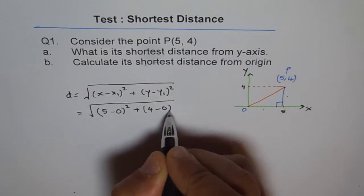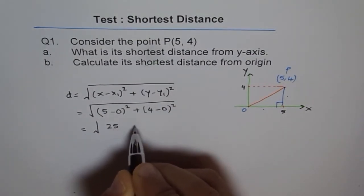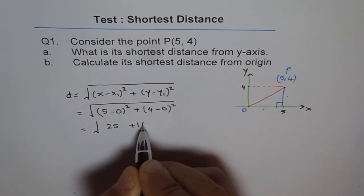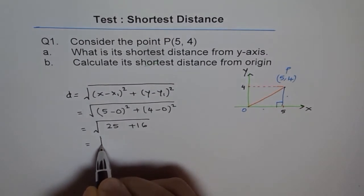Origin is (0, 0), do you see? So √[(5 - 0)² + (4 - 0)²], which gives you √(25 + 16). And then you can add them up.